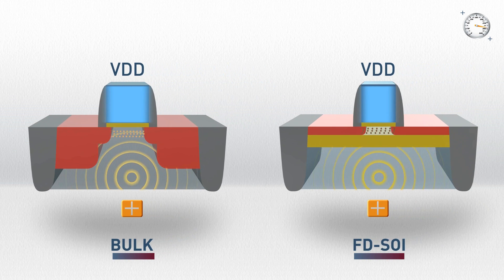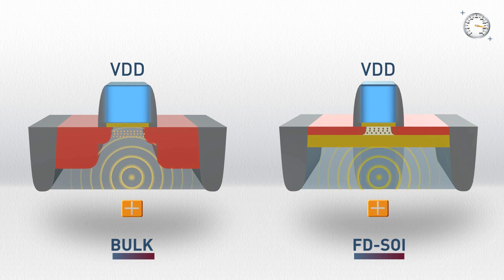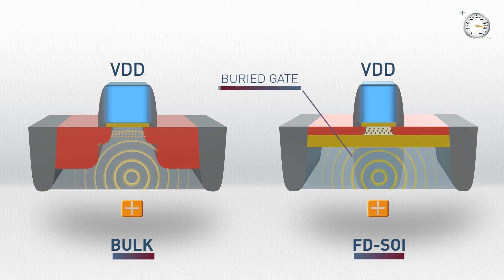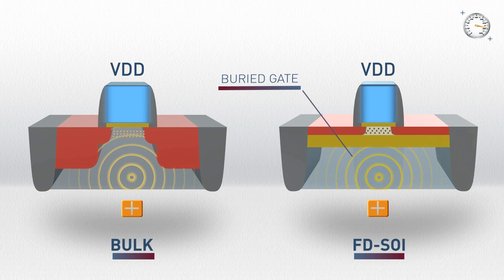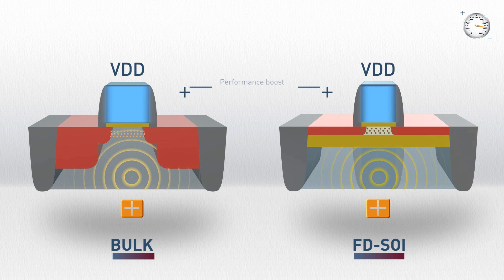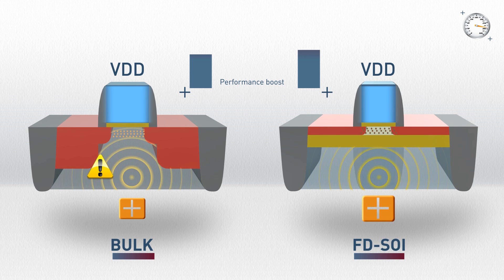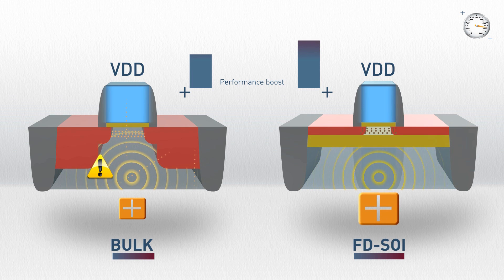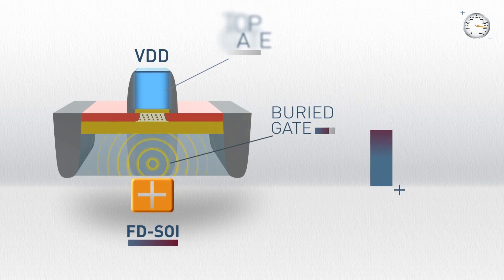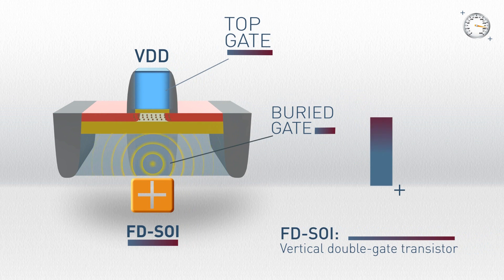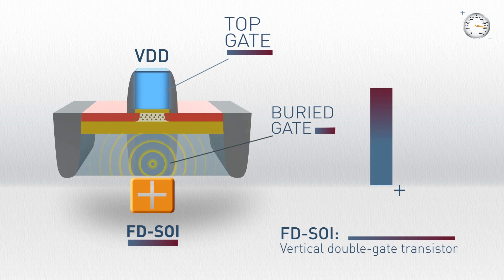Thanks to the ultra-thin insulator layer in FDSOI, the biasing creates a buried gate below the channel, making the FDSOI act like a vertical double-gate transistor. In bulk technology, the ability to do body biasing is very limited, due to parasitic current leakage. The buried gate on the FDSOI transistor prevents any leakage in the substrate. This allows a much higher voltage on the body, leading to a significant boost in performance.